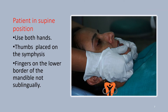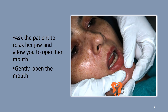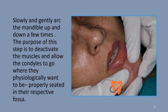We make the patient lie in supine position and use both hands. The thumbs are placed on the symphysis and the fingers on the lower border of the mandible — not sublingually. We ask the patient to relax her jaw and allow us to open her mouth gently. The thumbs are on the symphysis and the fingers on the lower border. We then slowly and gently arc the mandible up and down a few times. The purpose is to deactivate the muscles and allow the condyles to go where they physiologically want to be — properly seated in their respective fossae.